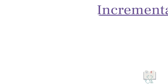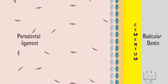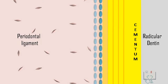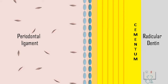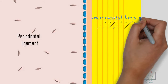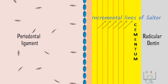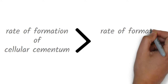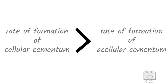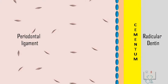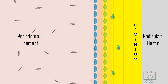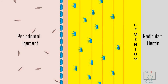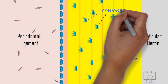Incremental deposition: cementum is deposited in a regular rhythmic manner with periods of activity and periods of rest, resulting in evenly spaced incremental lines, or incremental lines of Salter. The rate of formation of cellular cementum is more than that of acellular cementum, because of which in cellular cementum the incremental lines are more far apart and there is entrapment of cementoblasts within its own matrix, forming cementocytes.